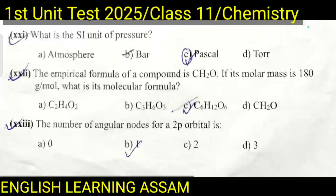Question number twenty-two: The empirical formula of a compound is CH₂O. If its molar mass is 180 gram per mole, what is its molecular formula? A. C₂H₄O₂, B. C₃H₆O₃, C. C₆H₁₂O₆, D. CH₂O. The correct option is C — C₆H₁₂O₆, which is the formula of glucose.